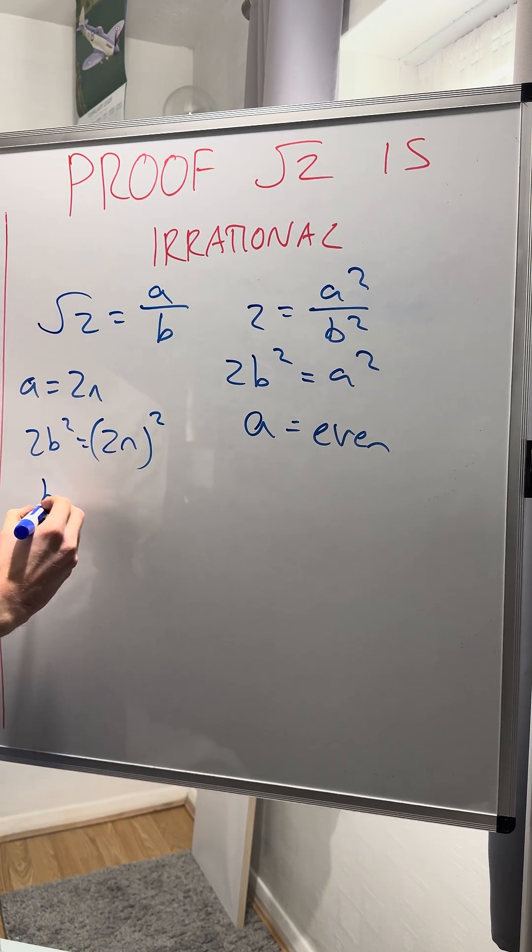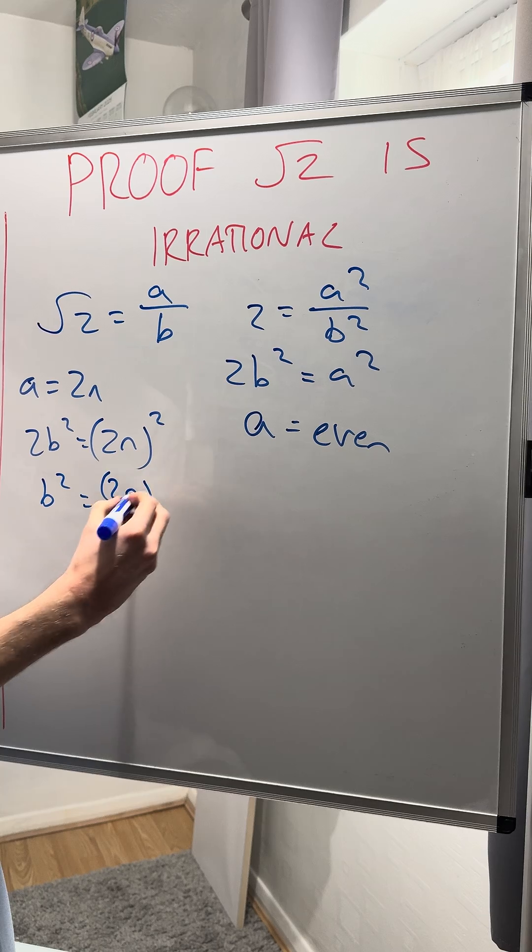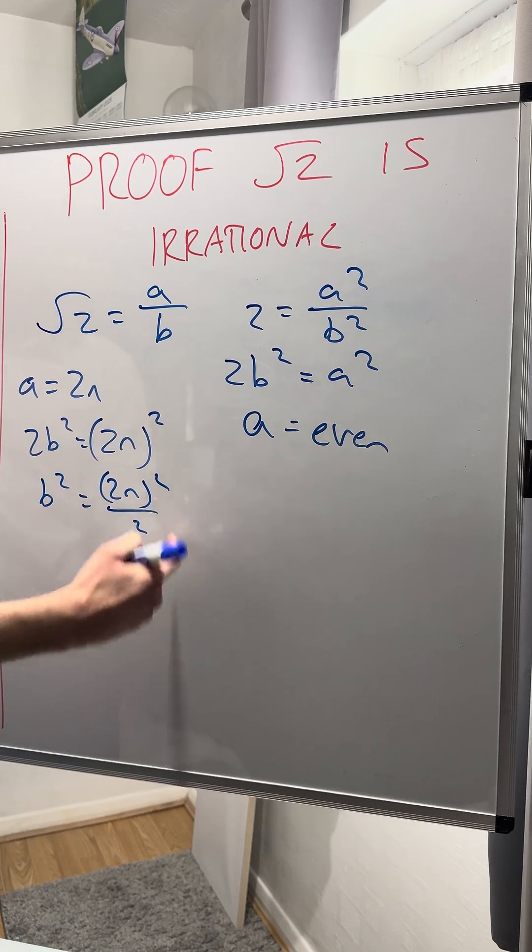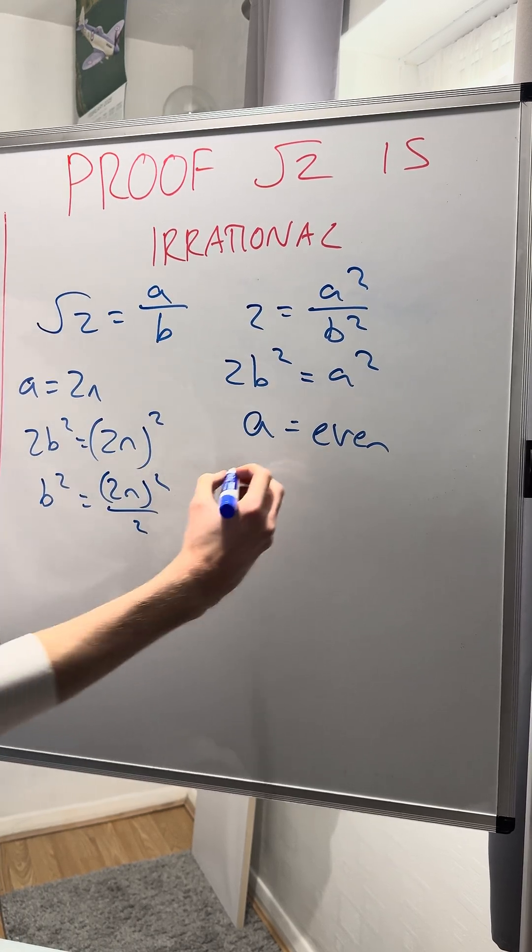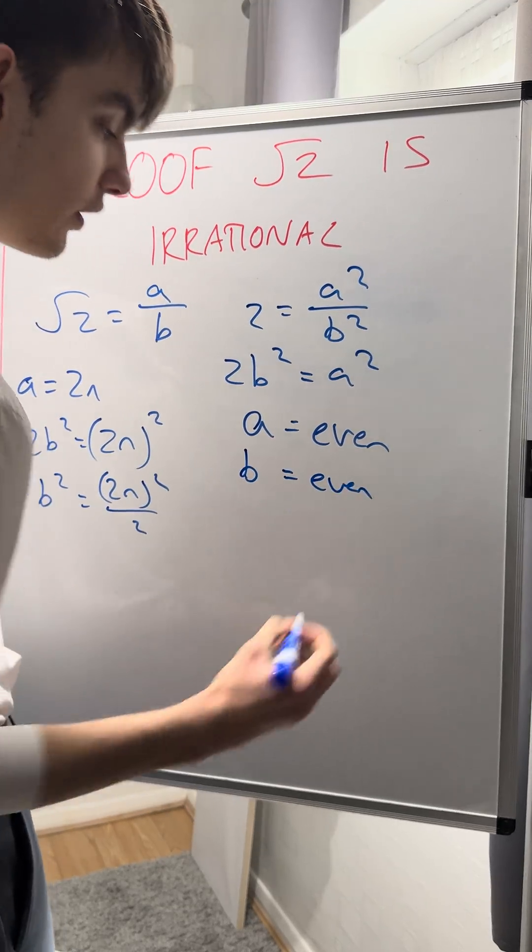A bit of rearranging and I get b squared equals 2n squared over 2. This also proves that b has to be even. Therefore, b is also even.